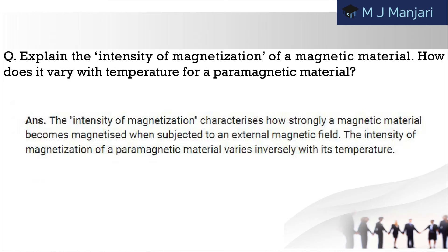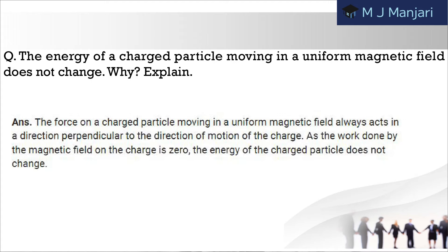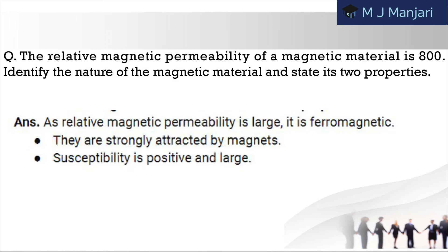Next: how does susceptibility vary with temperature for a paramagnetic material? Next: the energy of a charged particle moving in a uniform magnetic field does not change. Why? Explain. Next: the relative magnetic permeability of a magnetic material is 800. Identify the nature of the magnetic material and state its key properties.